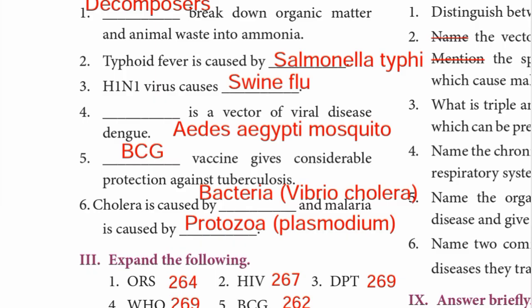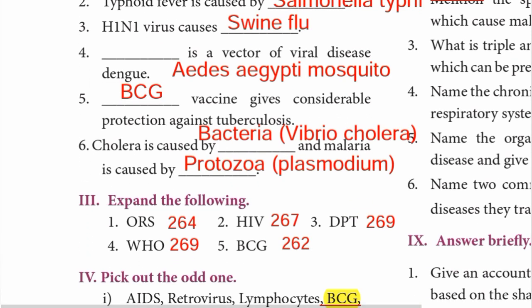Number five — blank vaccine gives protection against tuberculosis. The answer is BCG vaccine. Sixth — cholera is caused by the bacteria Vibrio cholerae, and malaria is caused by the protozoa Plasmodium.